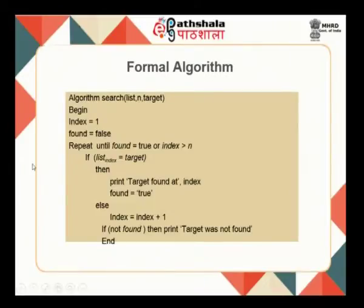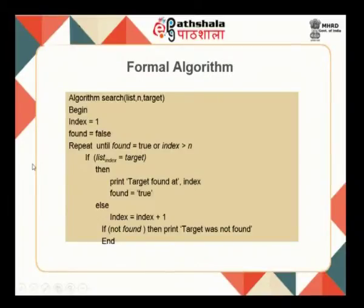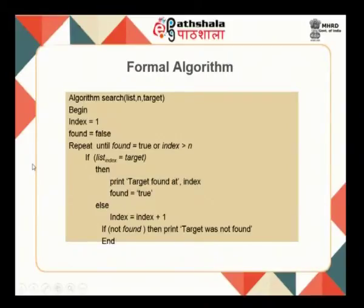The formal algorithm is named 'search', with input parameters being the list of n elements and the target. Begin by setting index to 1 and found to false. Start a repeat-until loop checking the target against all list elements, continuing until the target is found or all elements are processed. This is how the formal linear search algorithm looks.